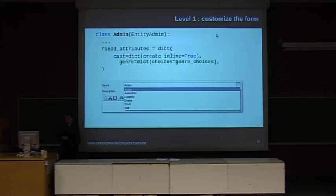Another way of customizing the form is through the field attributes attribute of the admin class. This specifies for each field a list of attributes that define how the field should be visualized. For example, for the genre field we can specify some choices that the user should get when editing this field.